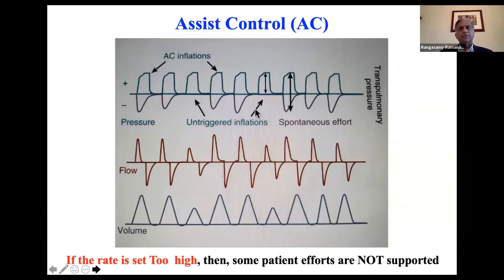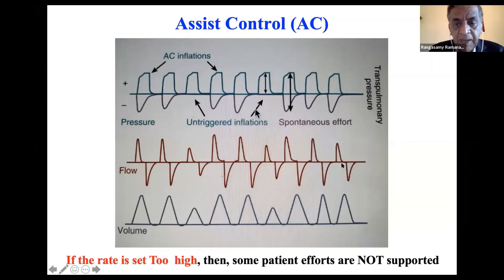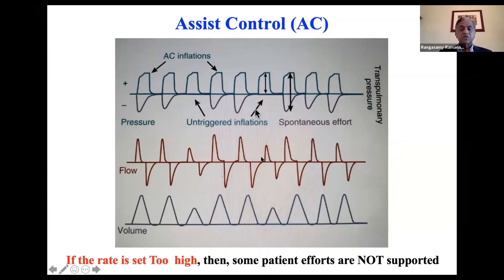In assist control mode, every single breath taken by the baby is assisted by the machine. Here is assist control — the baby takes a breath, the machine gives a breath. Every breath that exceeds the trigger threshold will be assisted by the machine. If the baby does not trigger, the baby takes its own breath, which means your trigger sensitivity may be set too high. Also, don't set your rate too high.